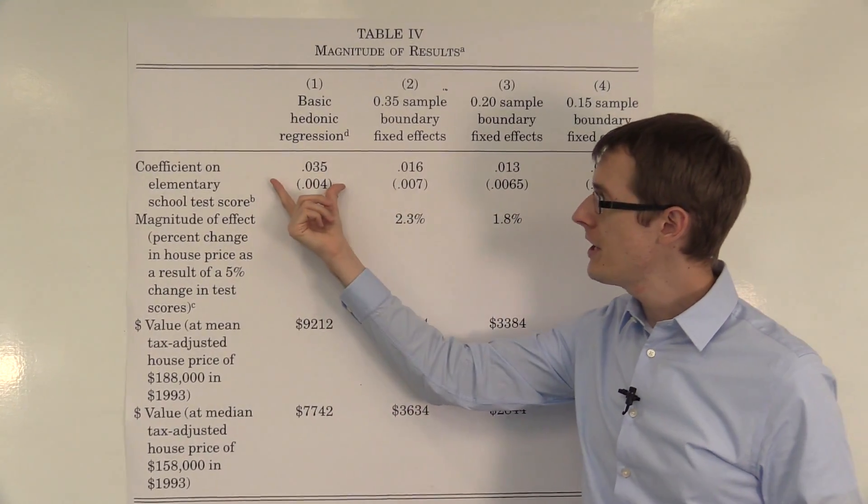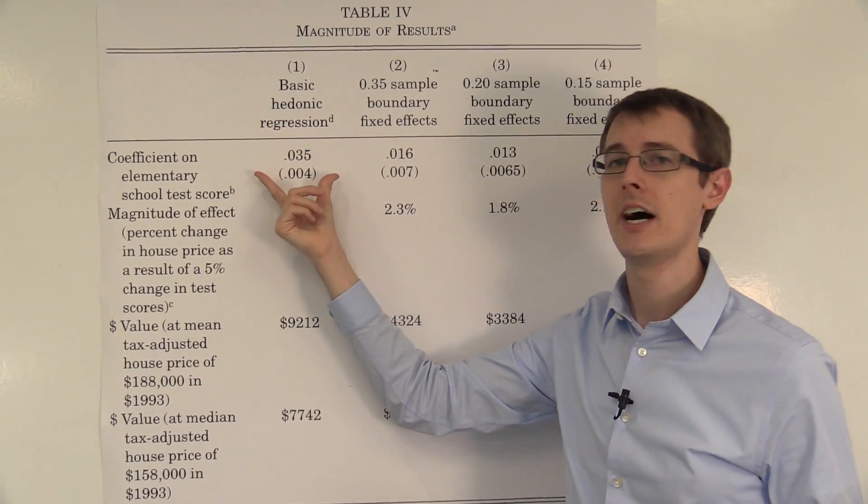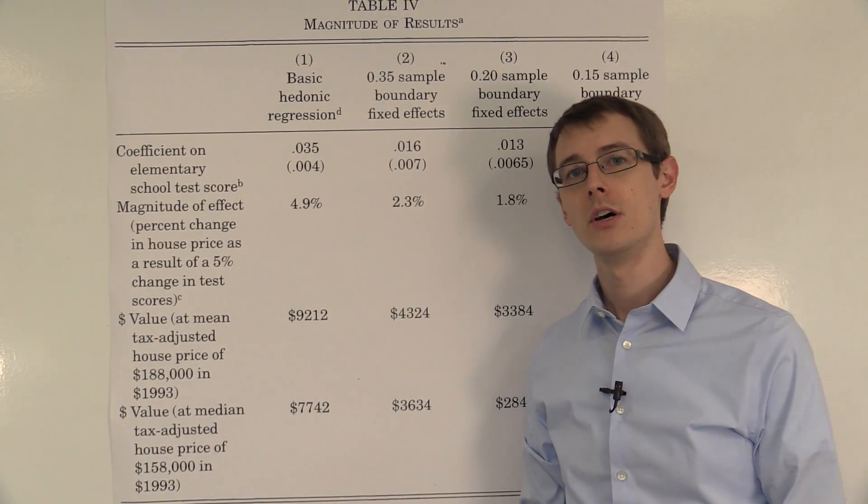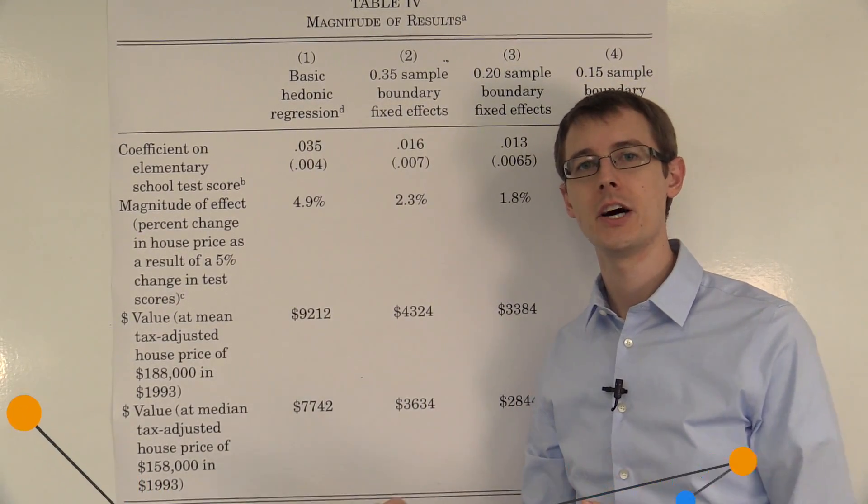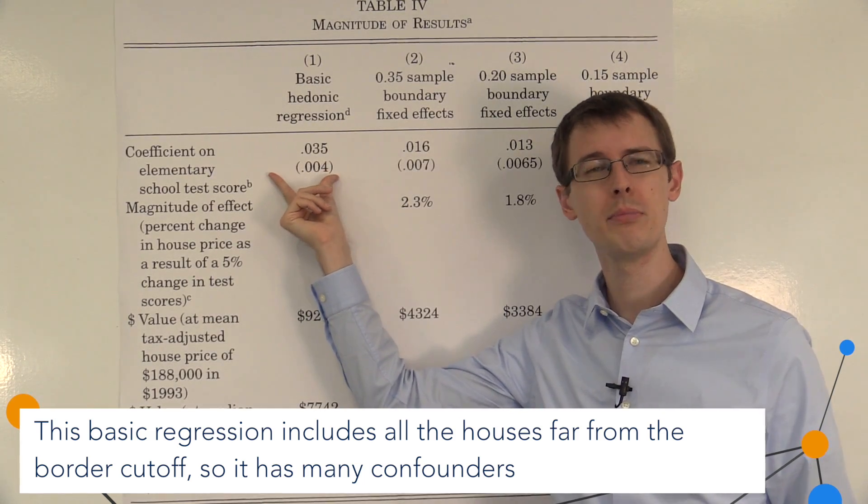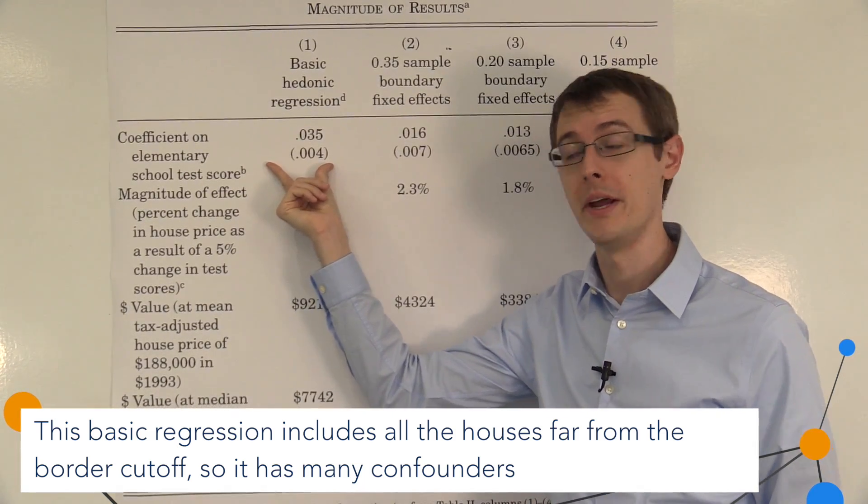So over here is what she calls the basic hedonic regression. That's including all of our houses in the sample where we don't worry about the regression discontinuity, we include everything. So this is a confounded estimate here. But let's just see if it was the truth, what would it mean?